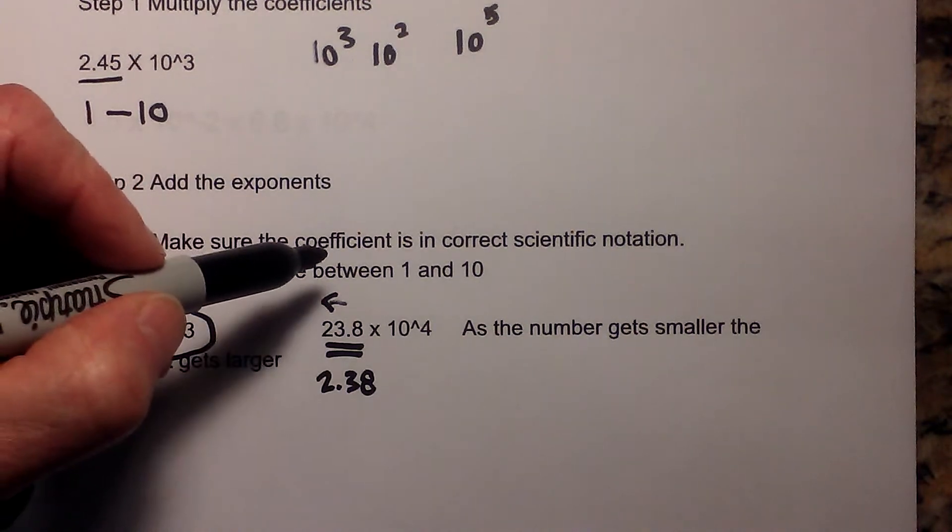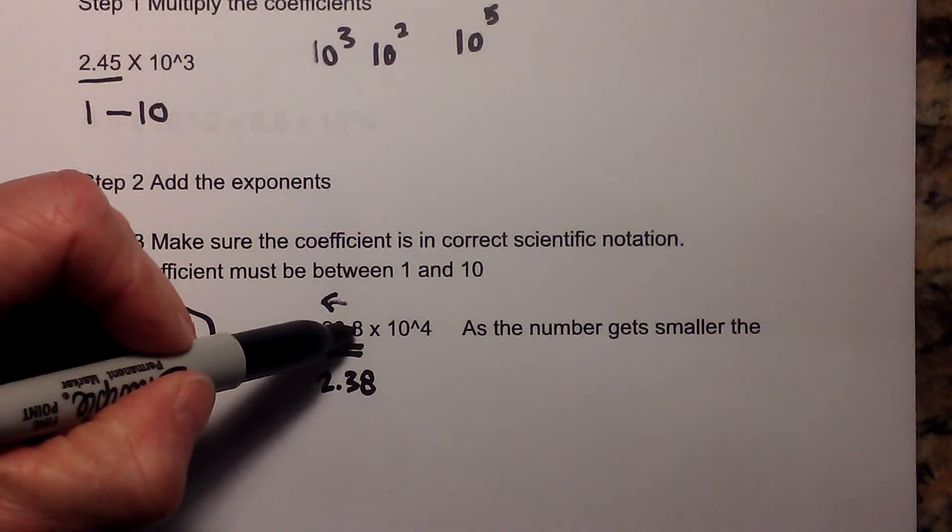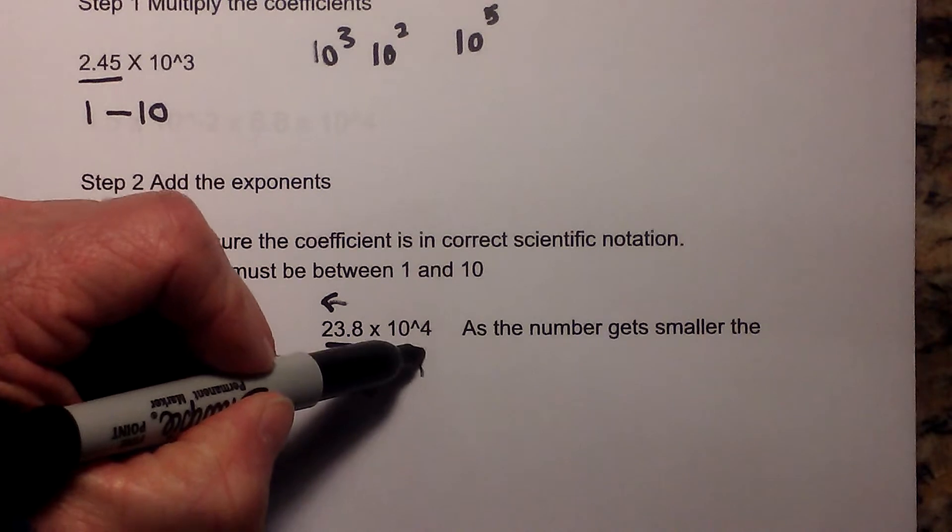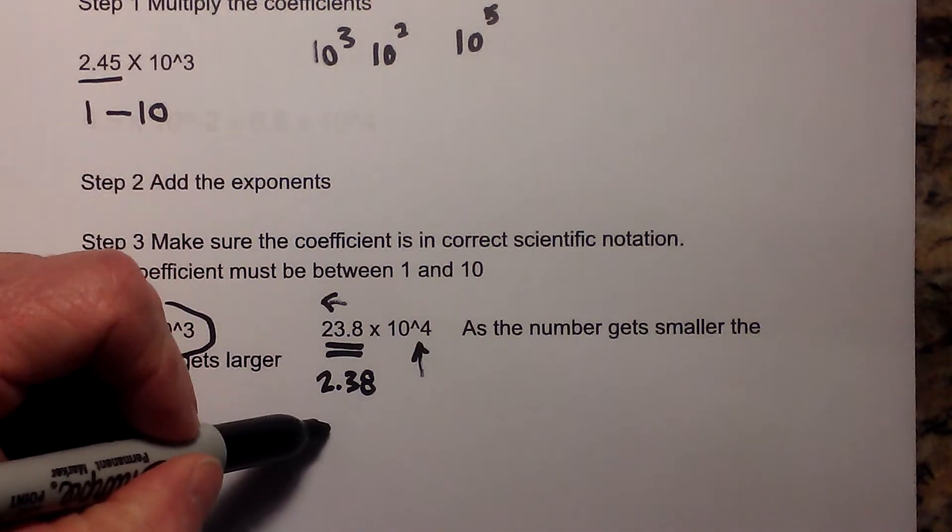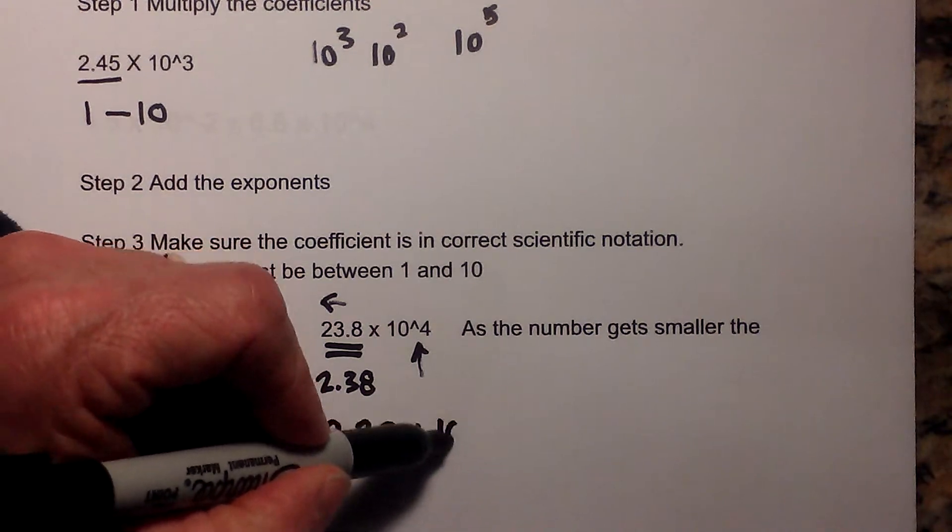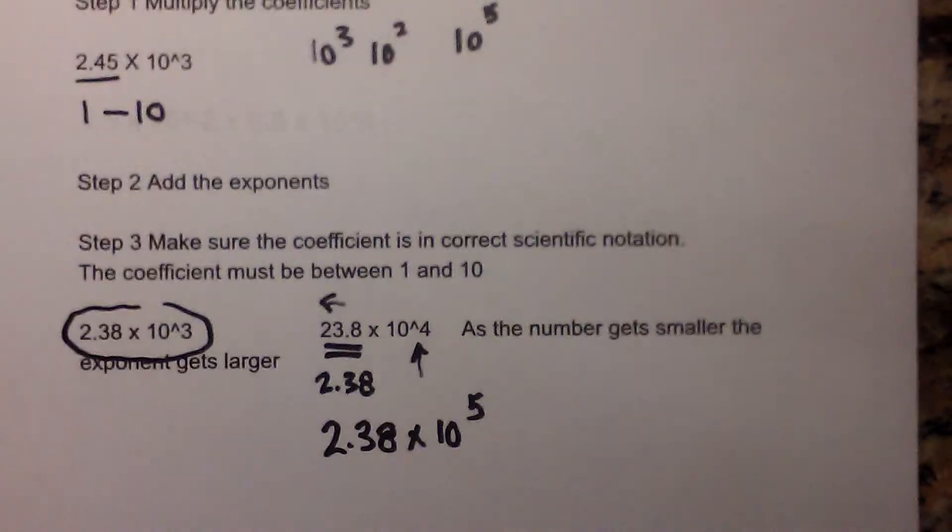Okay, so there is a relationship: as the coefficient gets smaller, the exponent gets larger. So that would become 2.38 times 10 to the fifth. Okay, so let's get started with two problems quickly.